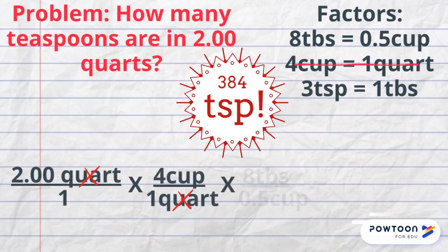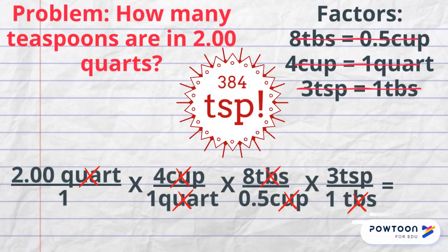So next time you're baking, and you have to measure two quarts, you can simply use 384 teaspoons. Well, maybe not.